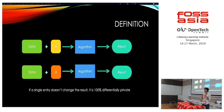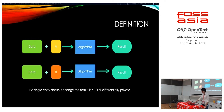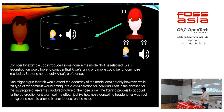If a single entry does not change the result at all — and when I say a single entry I mean every single entry — then it is 100 percent differential privacy. Of course, that would make the model pretty useless.